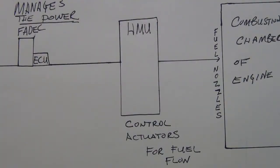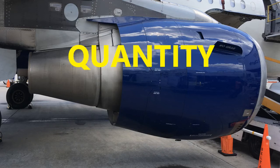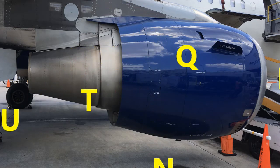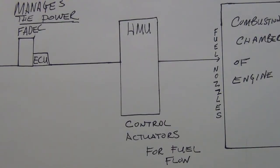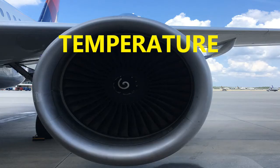With any system, you're going to be dealing with three aspects that need to be constantly monitored and kept within the green on displays — not in red or amber. The first is quantity. Having the right amount of fuel at any given point in time, based on demand requirements, is extremely crucial.